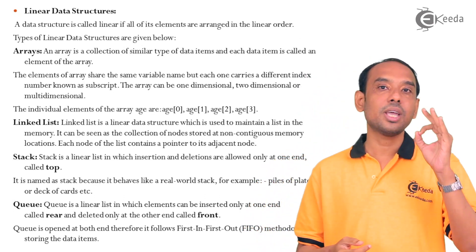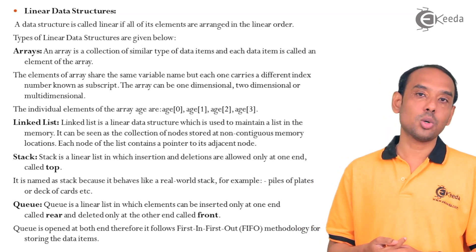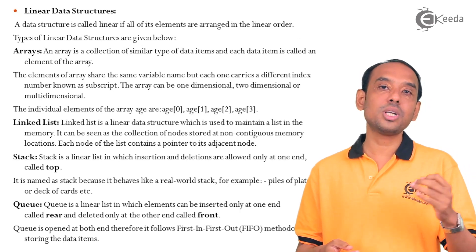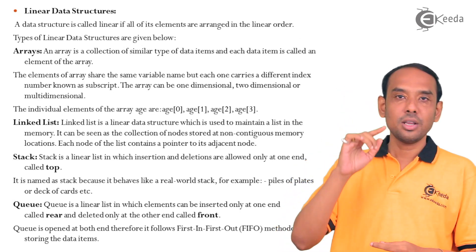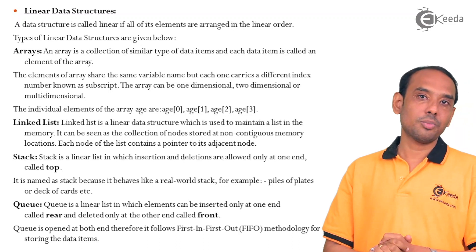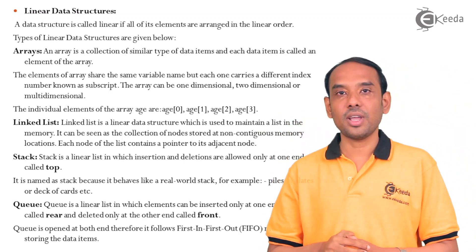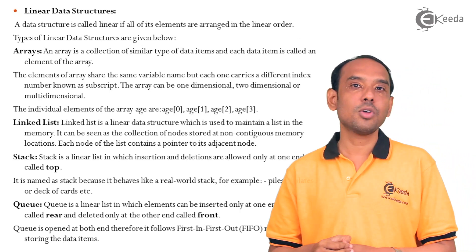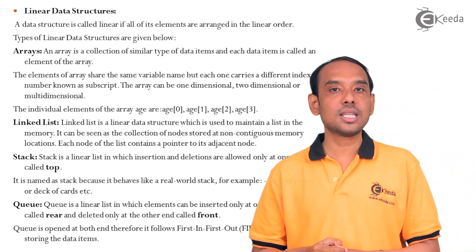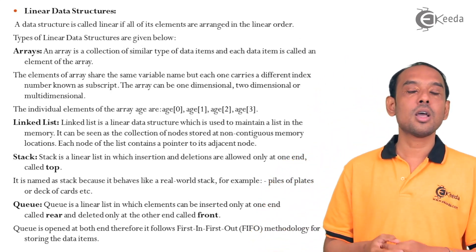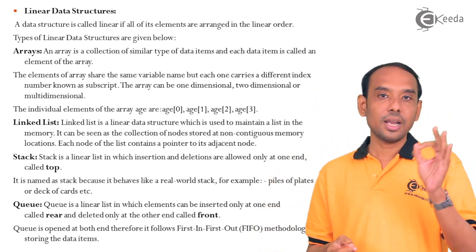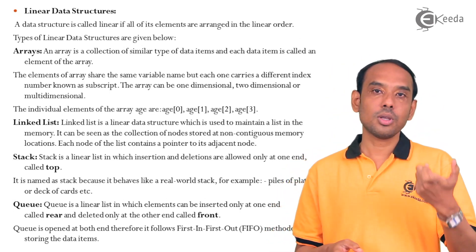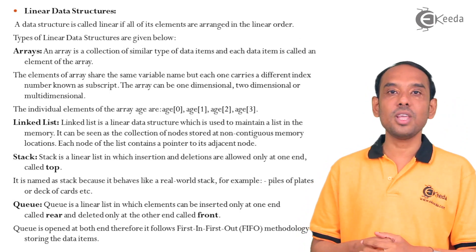Each data item in an array has a unique index, and the array index starts with 0 — this is called subscripting. Each array element can be accessed through its subscript. For example, for an integer array called 'age', to access the first element you write age[0], which gives you the first element of the array.